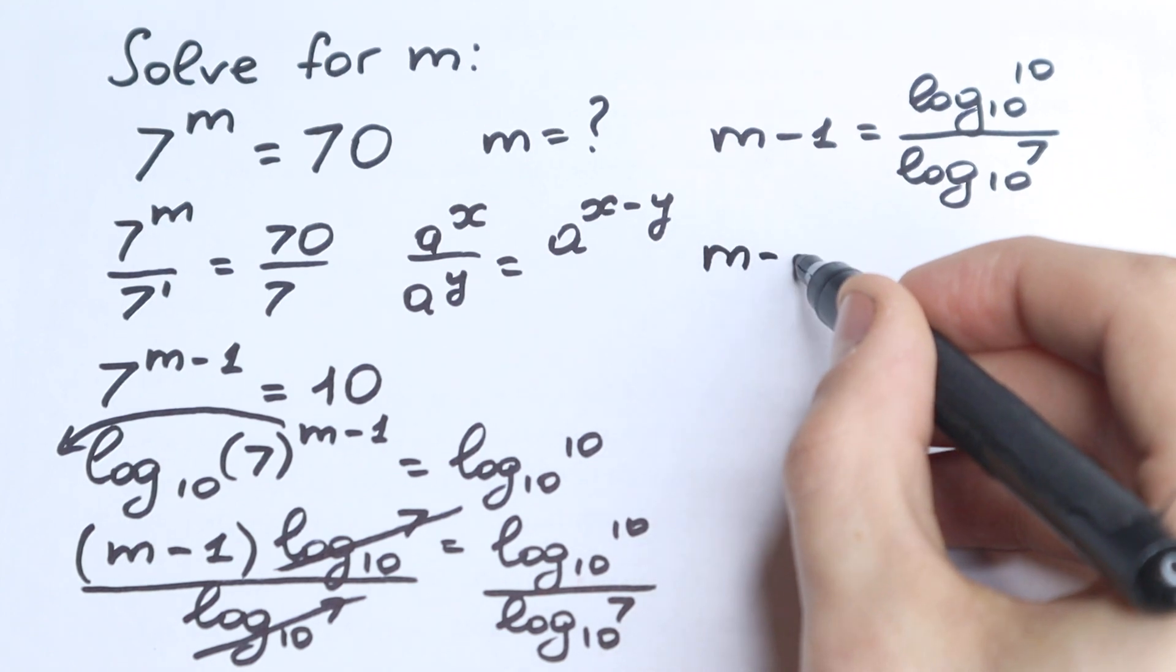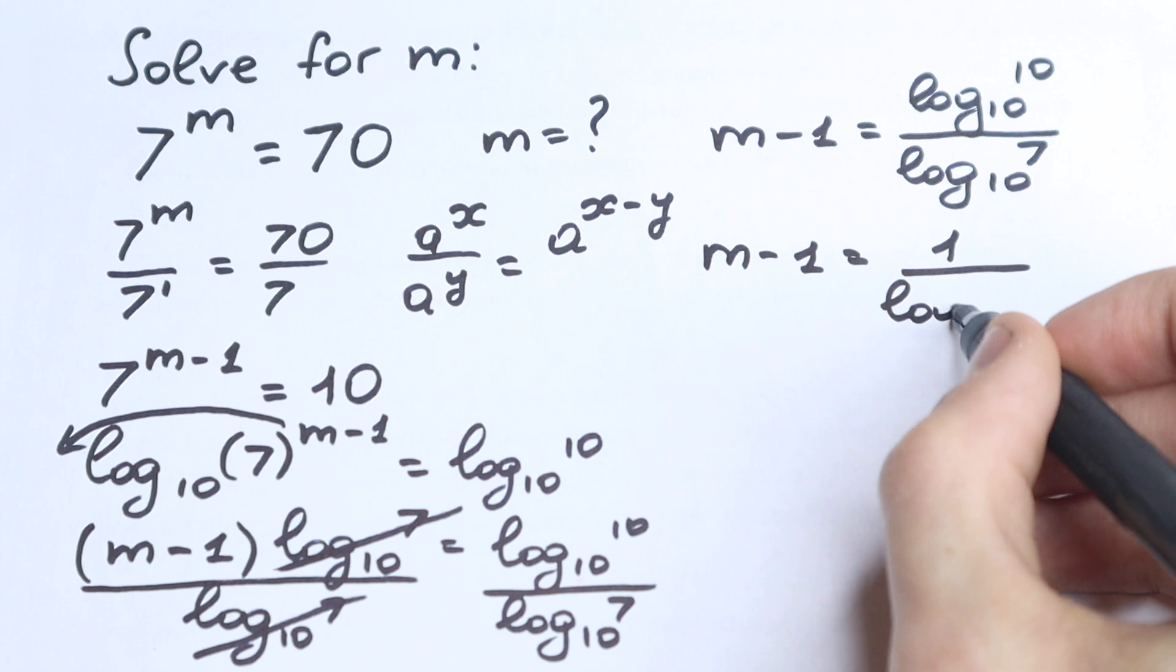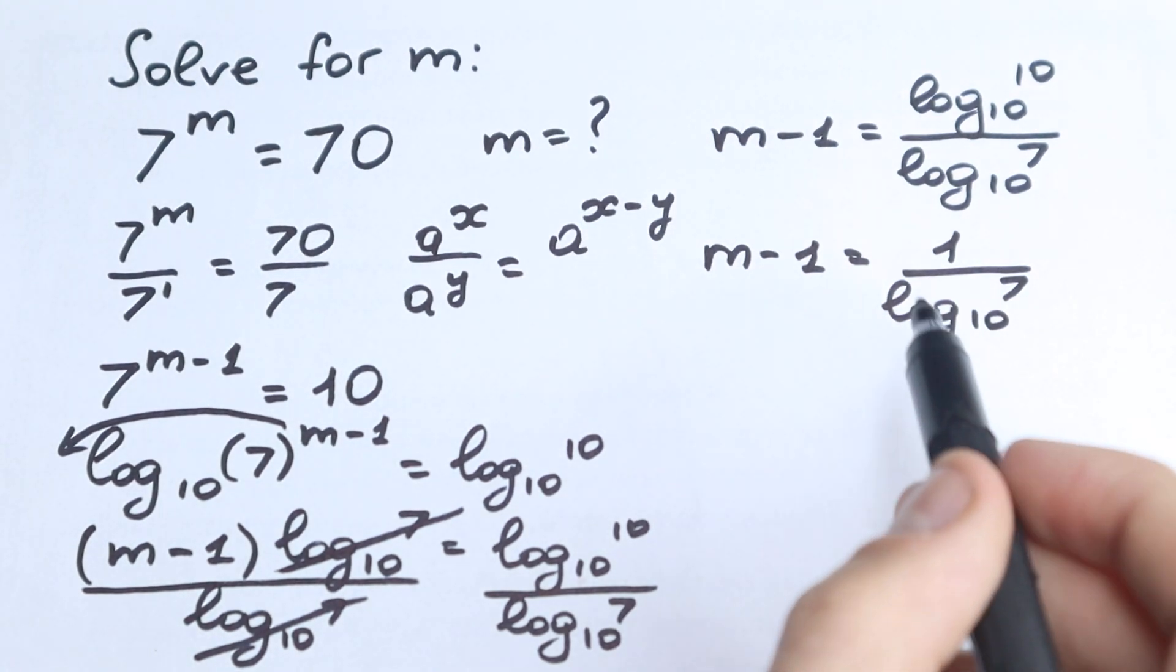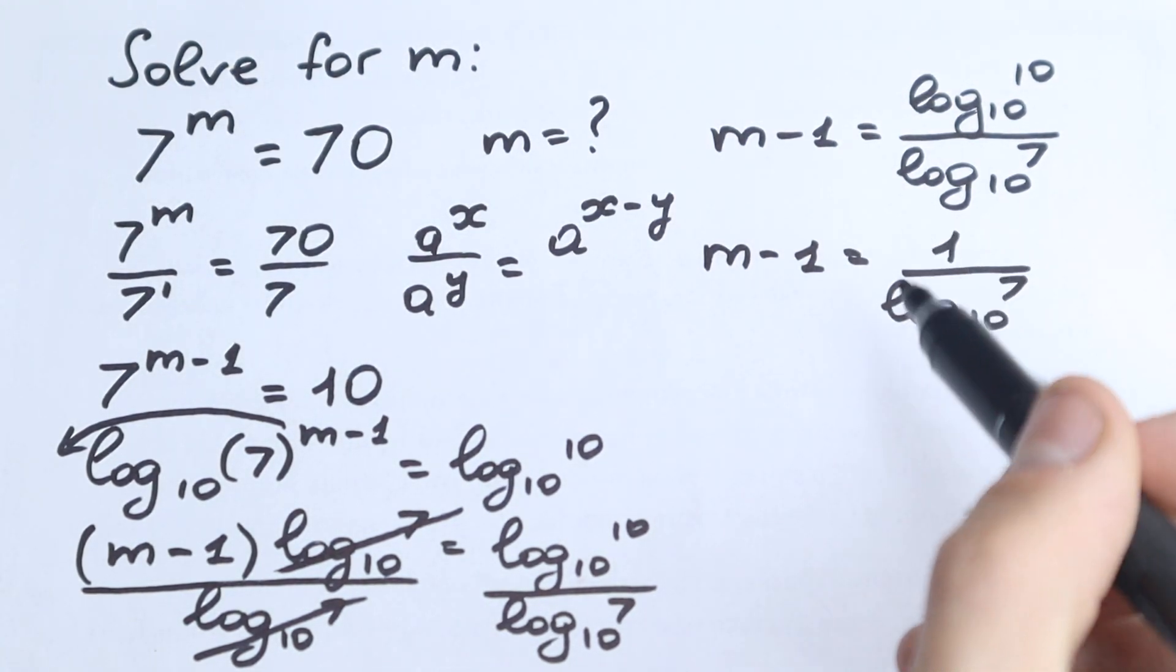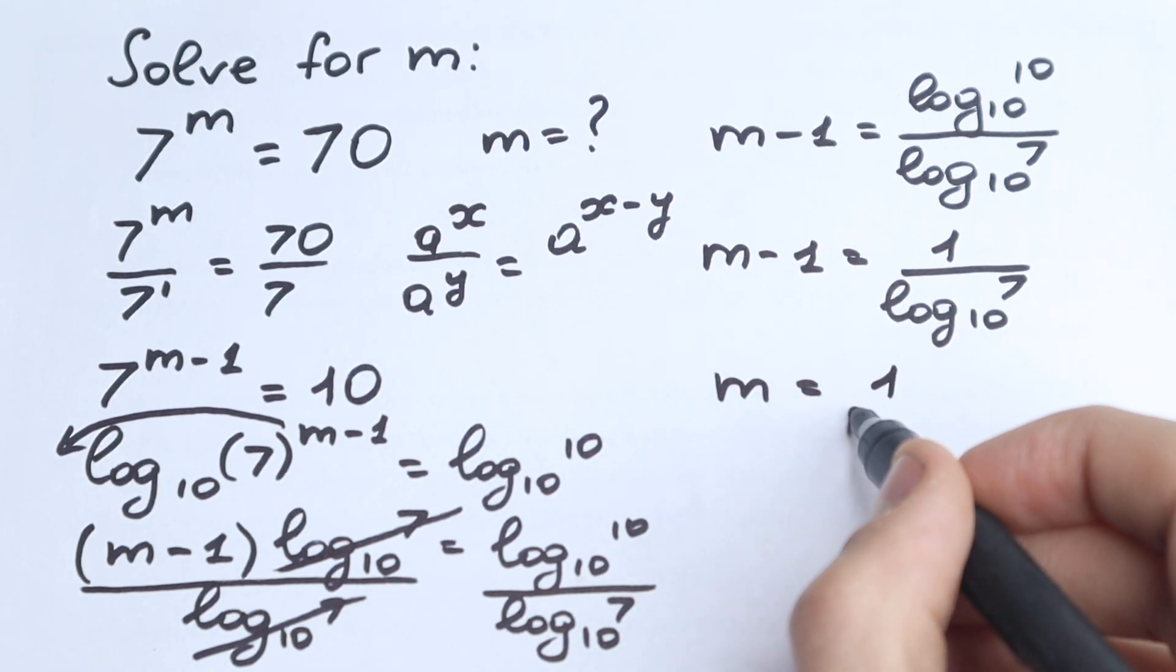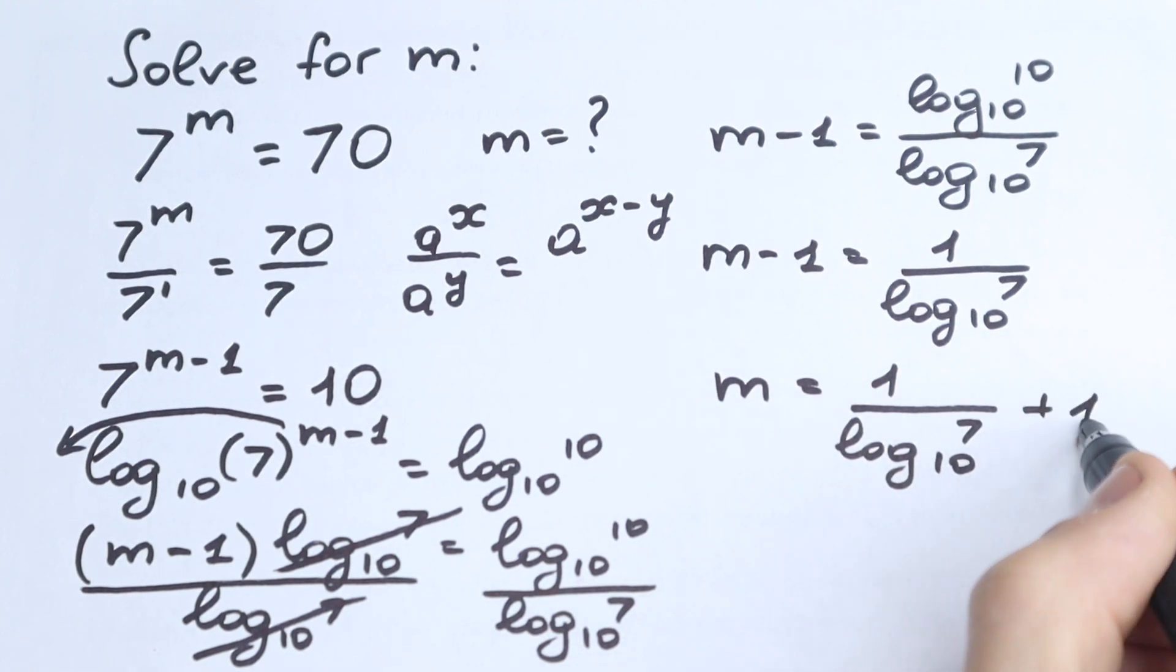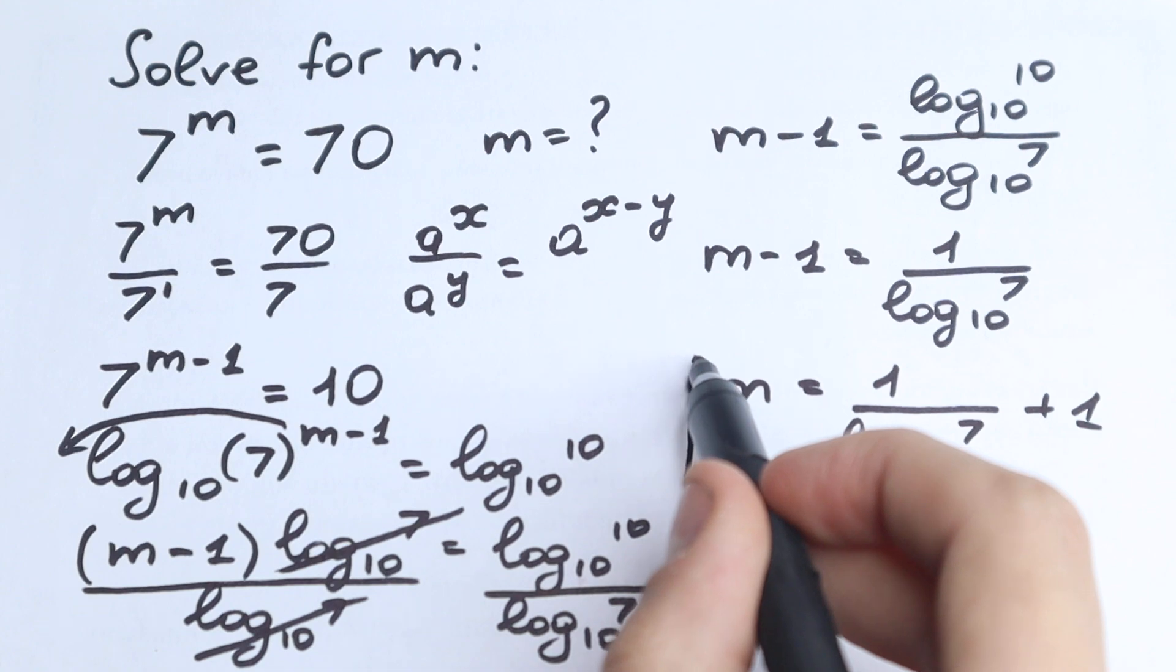So we have m minus 1 equals 1 over log₁₀(7). And let's bring this 1 to the right-hand side. So we have m equals 1 over log₁₀(7) plus 1. This is our answer.